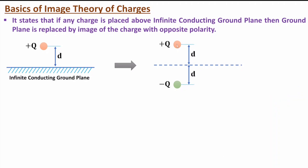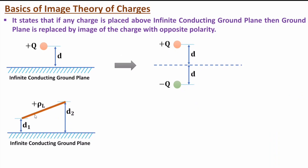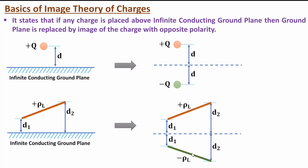Here we have a line charge placed with respect to an infinite conducting ground plane, where this line charge has spacing D1 on one side and D2 on the other. As per image theory, we replace the ground plane by the image of this line charge. The image spacing is D1 here and D2 here, mirroring the original. The image charge has opposite polarity — if the original is positive rho L, the image is negative rho L.